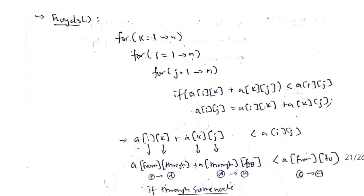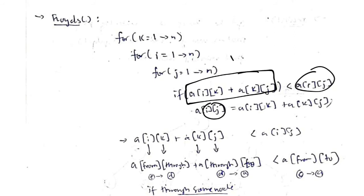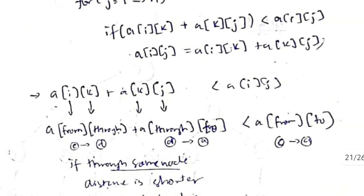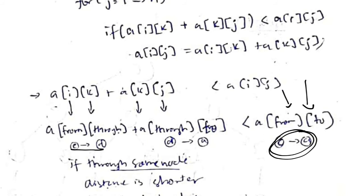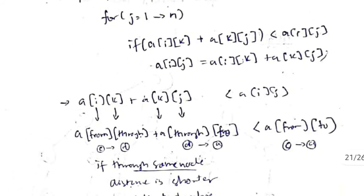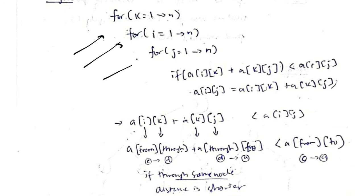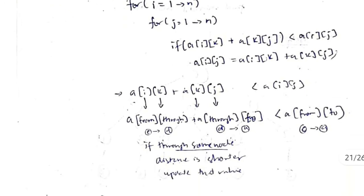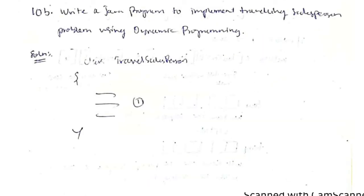In each iteration, we compare whether traveling through vertex k gives a shorter path than the direct path from i to j. We check: is a[i][k] + a[k][j] < a[i][j]? If so, we update a[i][j]. For example, from c to a: we compare the direct path versus c to d plus d to a. This is done for all possible from-vertex, to-vertex, and through-vertex combinations. When complete, we print the final matrix with all shortest paths.